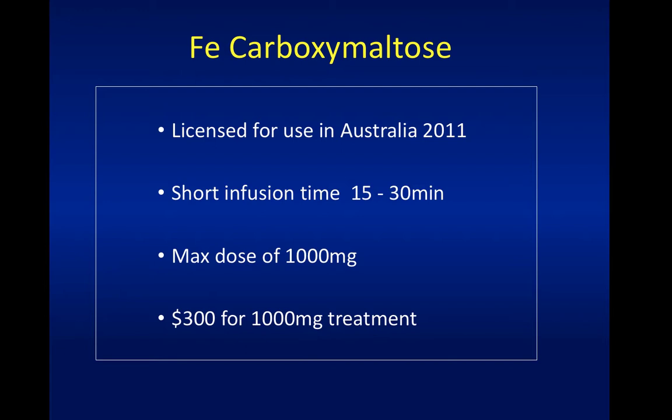Iron carboxymaltose is a similar preparation in that it is a large molecule and you can give close to a total dose infusion of about a thousand milligrams. It has been available in Australia for about five to six years, though longer in Europe. It is licensed to be given over 15 to 30 minutes in outpatient infusion clinics, which is why it is used for the majority of patients in most units. It costs approximately $300 for a thousand milligrams - about ten times more expensive - though PBS funding from the federal government makes this much less of an issue nowadays.